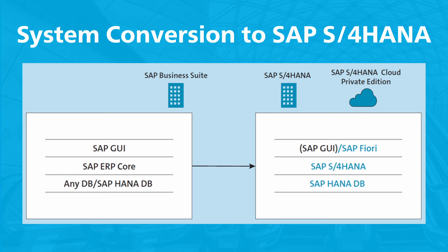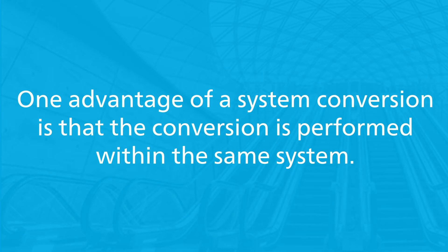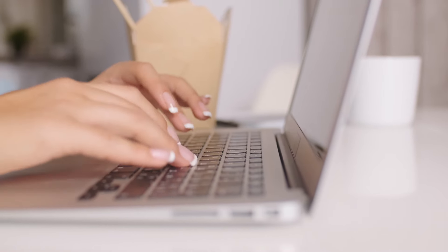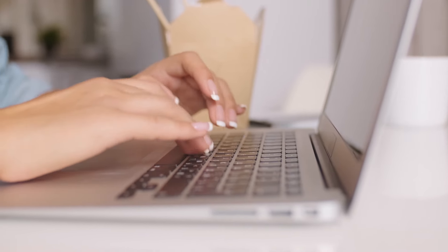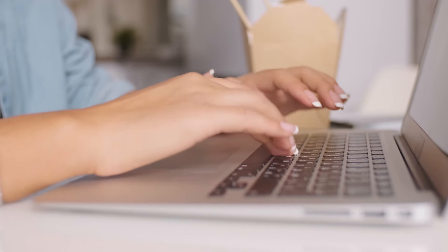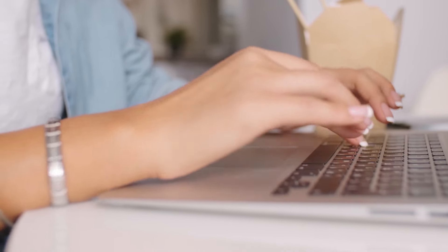A system conversion to the SAP S4 HANA Cloud Public Edition is technically impossible. One advantage of a system conversion is that the conversion is performed within the same system. For instance, an SAP Business Suite system can be converted into an SAP S4 HANA system in multiple steps, which is not a normal upgrade, because the system is completely transformed.